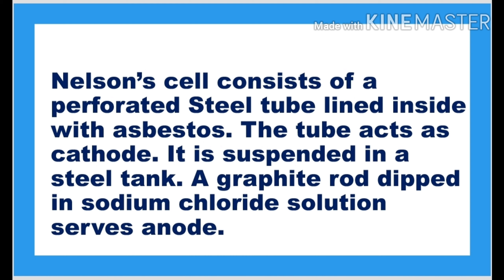In Nelson's method, brine solution is the electrolyte, and a perforated steel tube whose inner side is coated with asbestos is used as the cathode, and a graphite rod dipped in the sodium chloride aqueous solution acts as the anode.